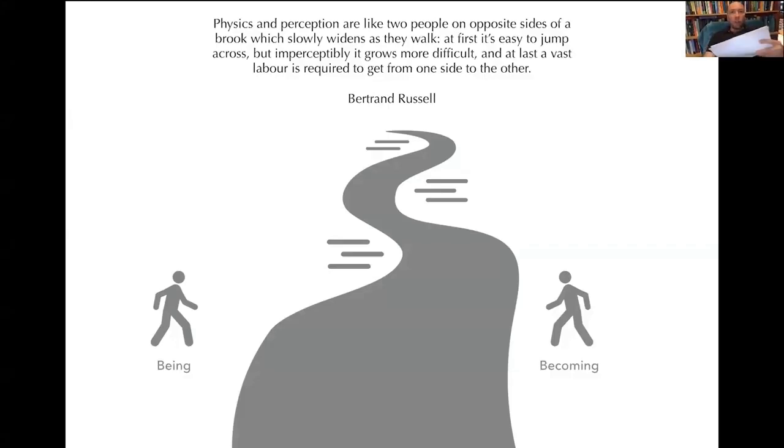Bertrand Russell puts it rather well. So he says that physics and perception are like two people on opposite sides of a brook, which slowly widens as they walk. At first, it's easy to jump across, but imperceptibly it grows more difficult. And at last, a vast labor is required to get from one side to the other.